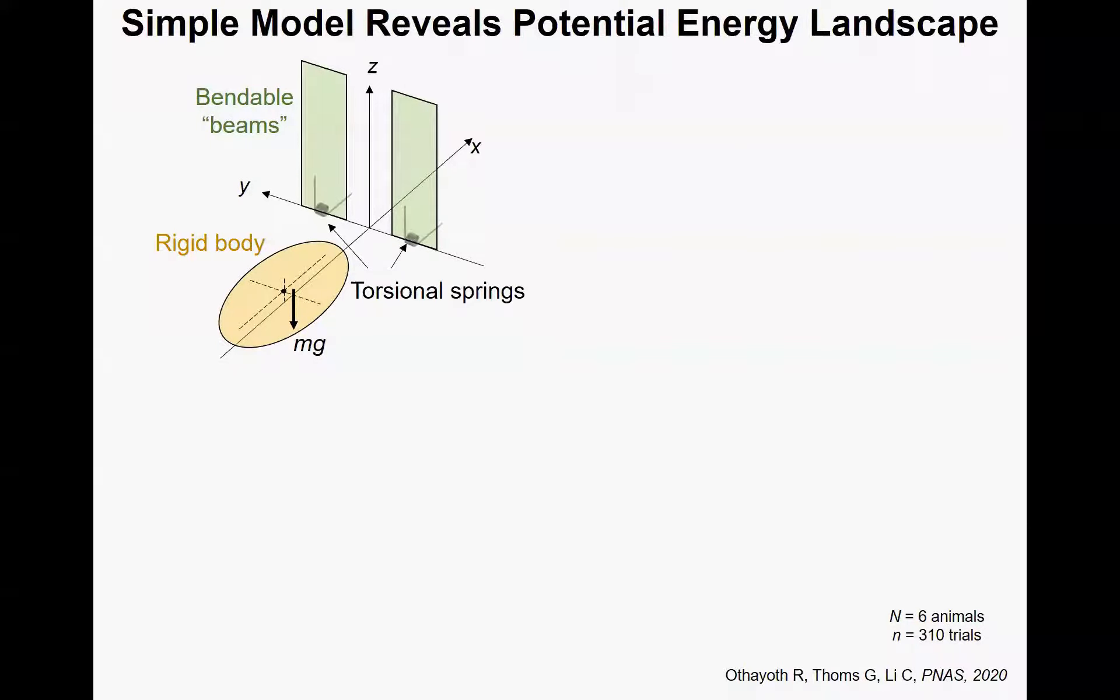To understand why they do this mode transitioning, we created the simplest model to describe the system. The cockroach was modeled as a rigid ellipsoid, and the grass was modeled as a rigid plate with bendable torsional springs at the bottom. So the beam could bend to different angles when the animal changes position or orientation relative to the beam. The potential energy of the system is the sum of gravitational energy from the body and beam, and elastic energy from the beam.